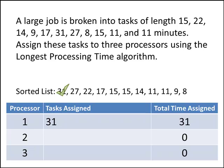The next task is 27 minutes long. We've got a tie between processors two and three for the least amount of time assigned, so we assign it to processor number two — again breaking ties with the lowest numbered processor. Now we've got 27 minutes assigned to processor two. Our next task is 22 minutes long, and processor three has the least amount of time assigned, so the 22 goes there. Our next task is 17 — processor three is again the lowest, so that's where we'll put our 17. Now we've got 39 minutes total assigned to processor three.